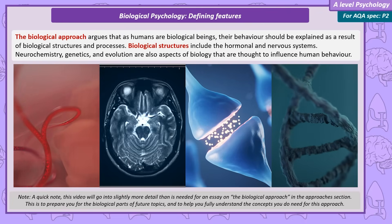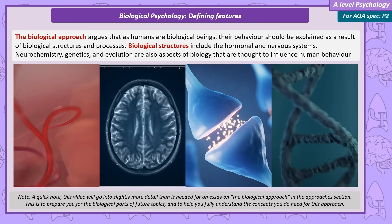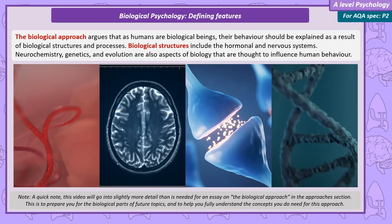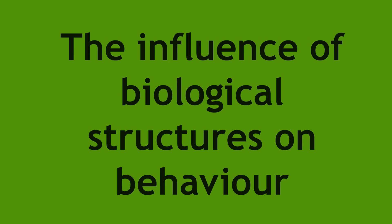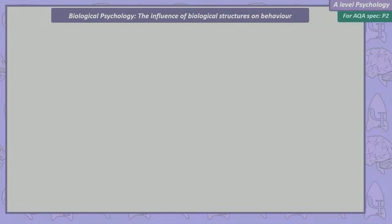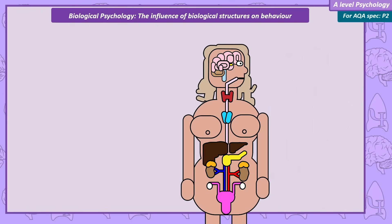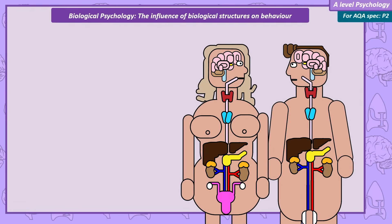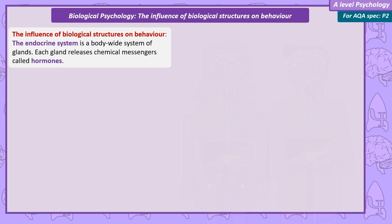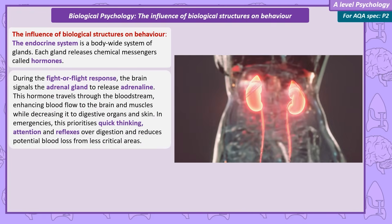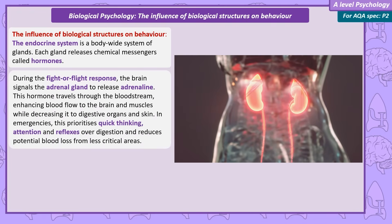We can start with the largest biological structure and work down to the smallest. The influence of biological structures on behaviour: the largest biological structure that influences behaviour is the body-wide system of glands that make up the endocrine system. These glands release chemical messengers called hormones. One gland, the adrenal gland, activates in the fight-or-flight response.